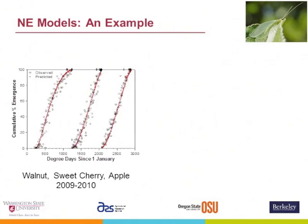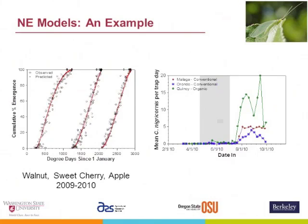One of the nice things about these lures is they bring in large numbers, so we can start to develop phenology models to determine when natural enemies occur in the season. A red line shows the model in each case, and the dots show the real data. We get very good agreement between walnuts, sweet cherry, and apple — about 18 orchard-years of data from 2009 and 2010. However, in sweet cherry there's a gap where few lacewings are caught, corresponding to the first generation, because heavy pesticide sprays occur in both conventional and organic at that point to control black cherry aphid, western cherry fruit fly, and powdery mildew.